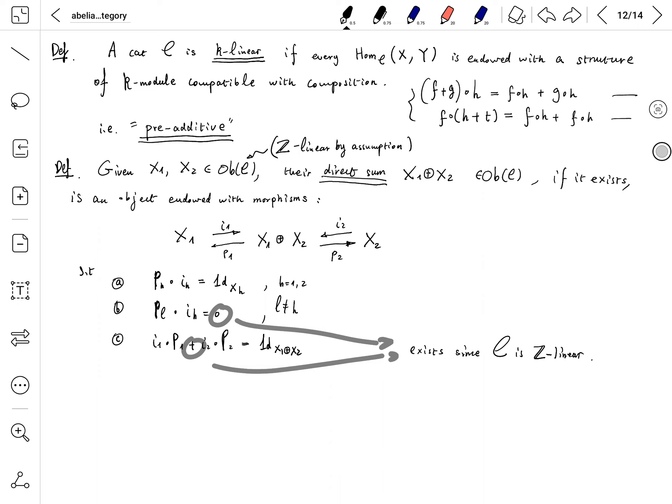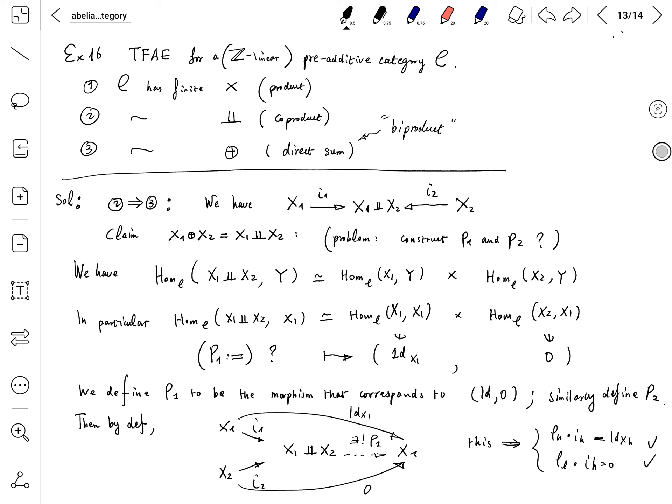So for this exercise, we will just prove that 2 implies 3. This is a classical result in category theory.